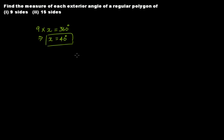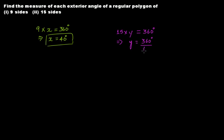If the polygon has 15 sides, there will be 15 exterior angles and the sum of all exterior angles has to be 360 degrees. Assuming each exterior angle is y, then 15y = 360 degrees. Solving, y = 360 ÷ 15 = 24 degrees.